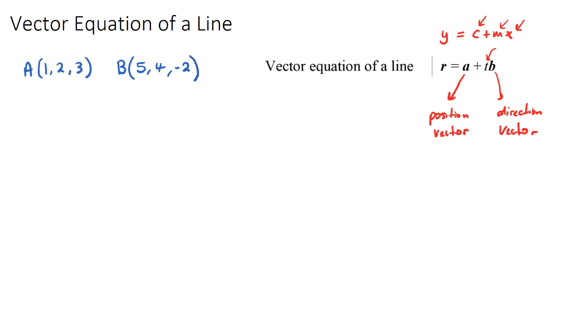Okay, so these coordinates can also be written in position vector form. So the position vector of OA just means what was the journey that we had to go through to go from the origin, which is 000 to point A, and that would just be 1, 2, 3.